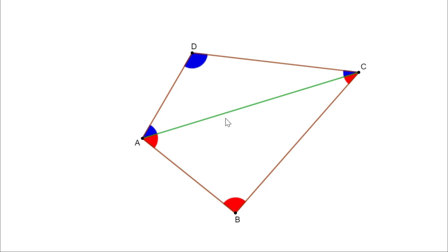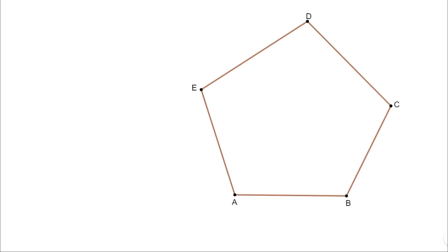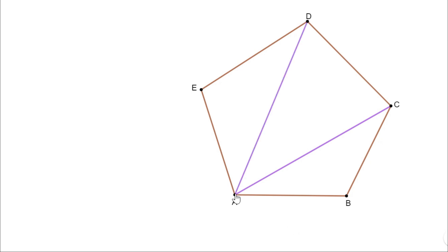Now what is the sum of the angles of a pentagon? Let us take a pentagon and divide it into triangles. For that, let me select any vertex of this pentagon — let me select A. Now draw all the possible diagonals from A. When I join A to B, it is not a diagonal; it is a side of the pentagon. Let me join A to C — I get a diagonal. If I join A to D, I get another diagonal. If I join A to E, I will not get a diagonal; it is a side. So I can draw two diagonals from vertex A, and the pentagon is divided into three triangles.